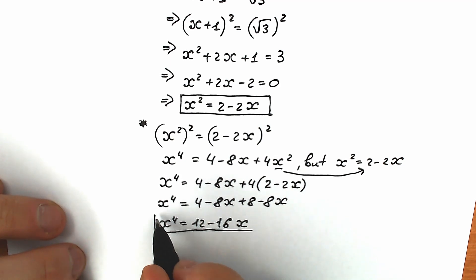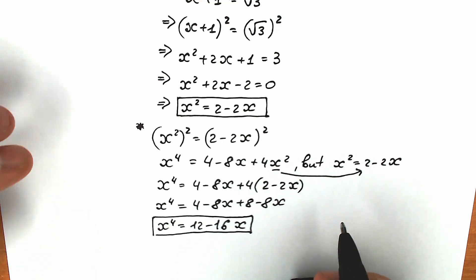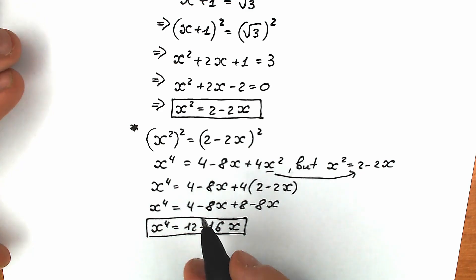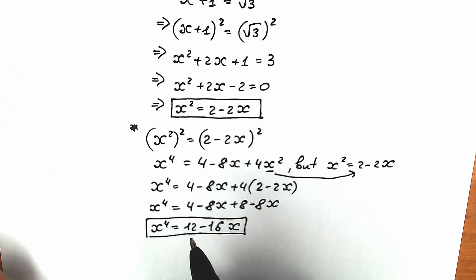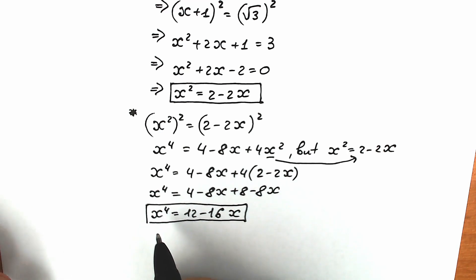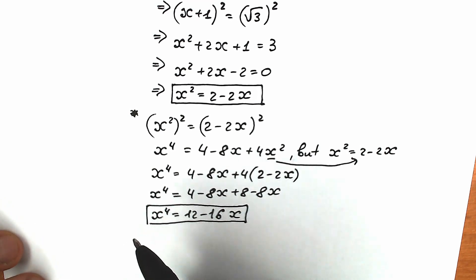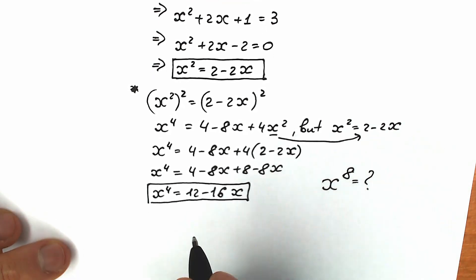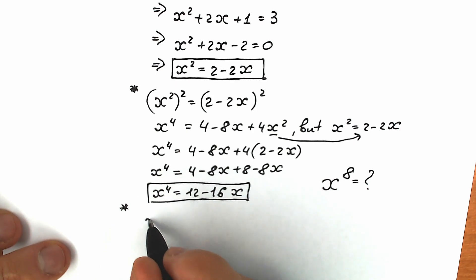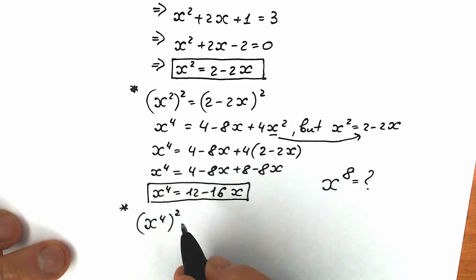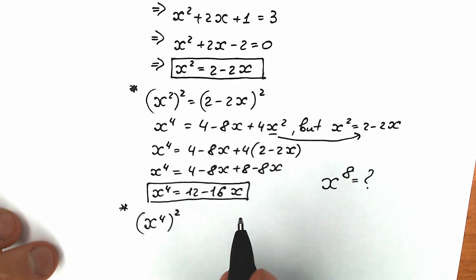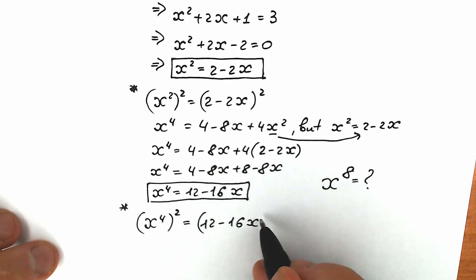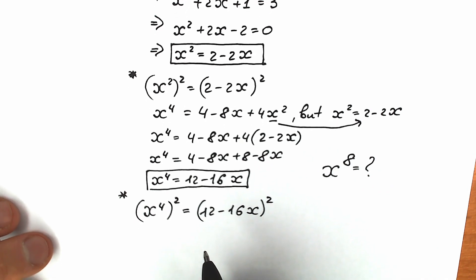We know everything about x to the 4th power, but we need x to the 8th power. To get there, we raise both sides of x to the 4th equals 12 minus 16x to the second power. That gives us x to the 8th on the left side, and we need to expand 12 minus 16x squared on the right side.